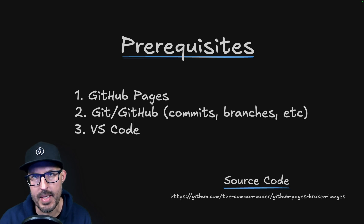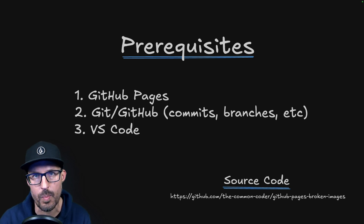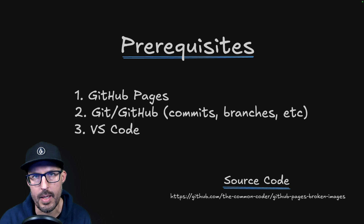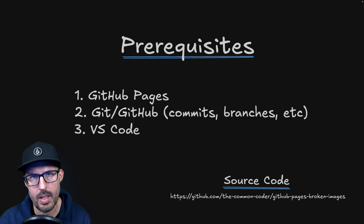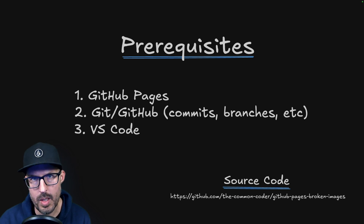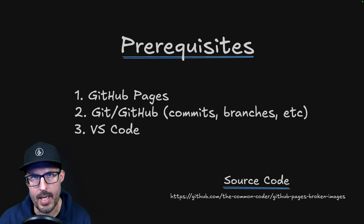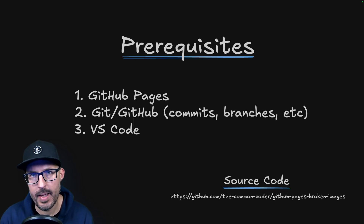You'll also need a basic understanding of Git and GitHub, specifically around things like commits and branches. I'm going to be using different branches to demonstrate the different reasons why your images might not be loading correctly. I'll be using Visual Studio Code exclusively throughout this video, but you should be able to follow along using the editor of your choice. If you want to follow along, you can fork the repository I'm working with — the link is shown in the bottom right-hand corner and also in the description below.